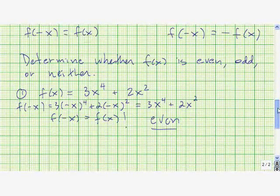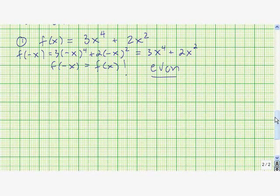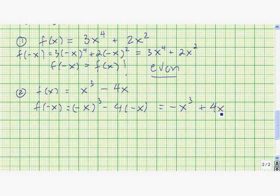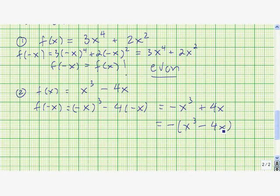Let's look at another example. We start by replacing x with negative x, so we get (-x)³ - 4(-x). Now (-x)³ = -x³ and -4(-x) = +4x, giving us -x³ + 4x. This is the negative of the original function x³ - 4x, because factoring out a negative gives -(x³ - 4x). So this function is odd, since f(-x) = -f(x).